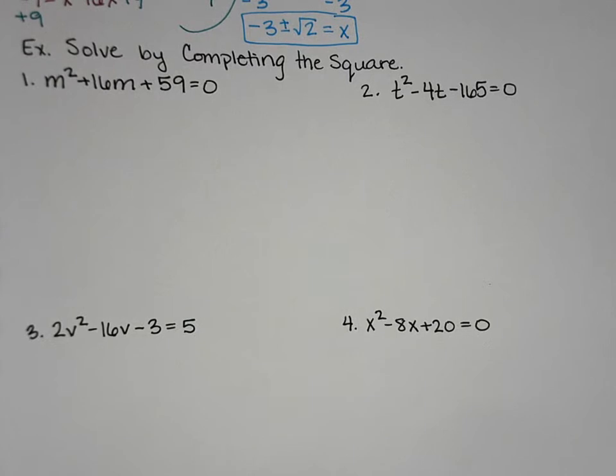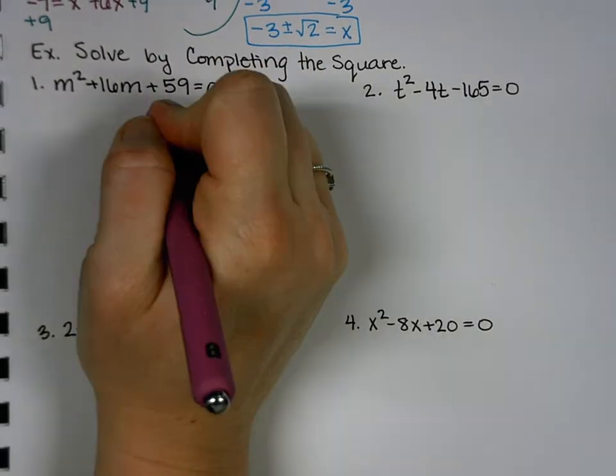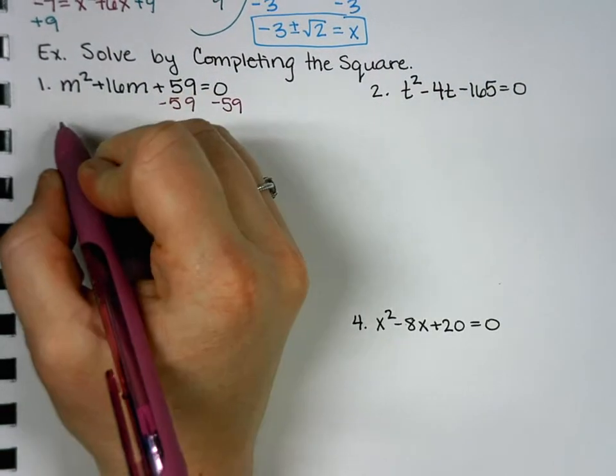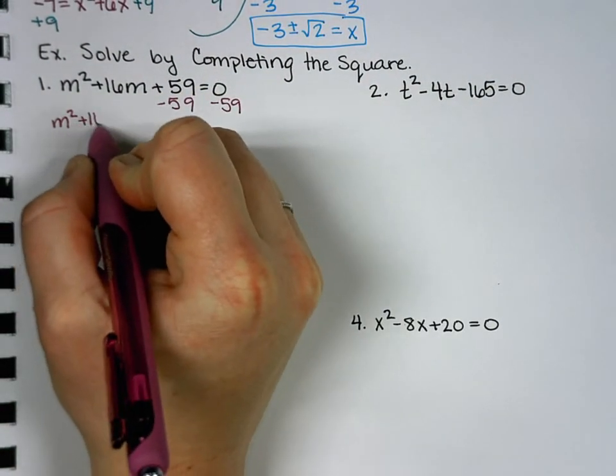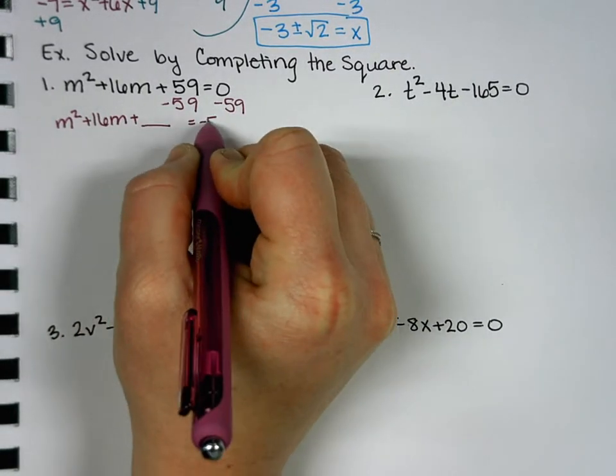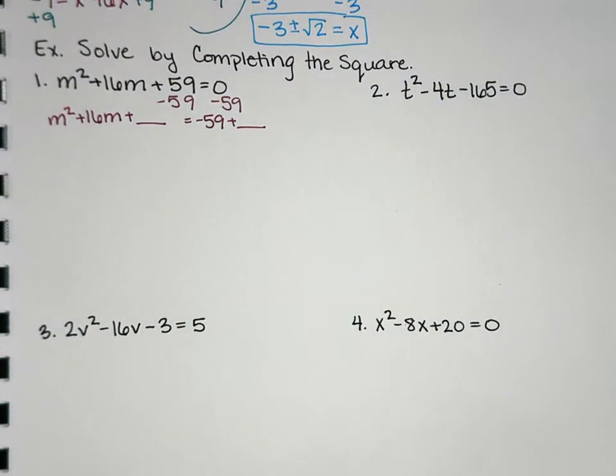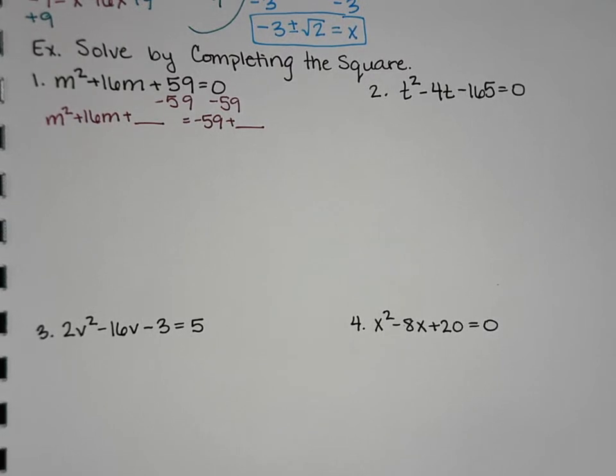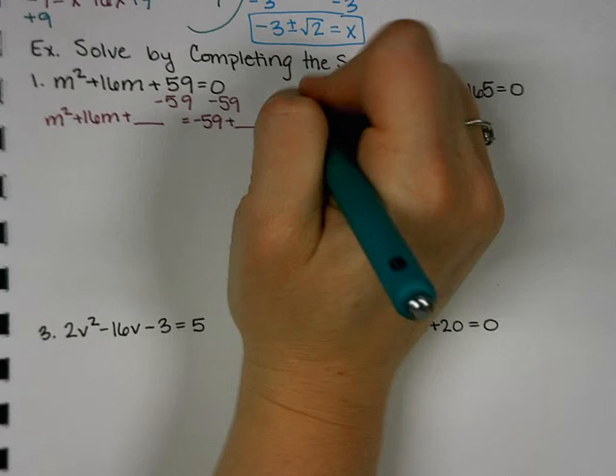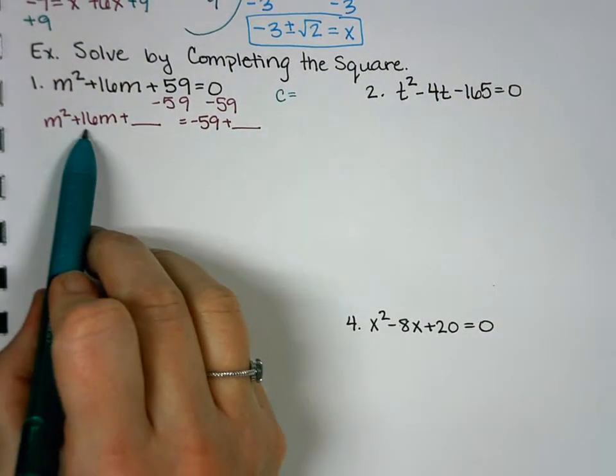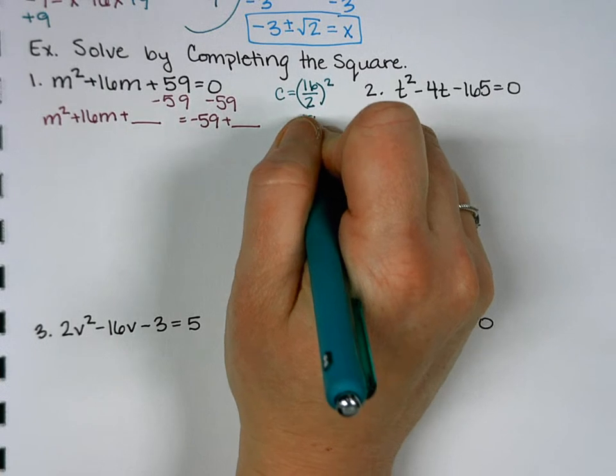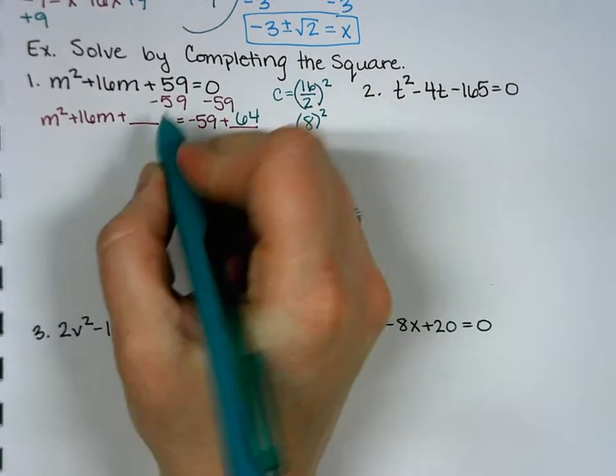So, step one, move the constant over. So for those who are absent, we're going through the steps right now. Step one, move the constant over. Then we need to find c, that we're going to add to both sides. I put those blanks in there when solving to remind myself, I have to put the number on both sides, whatever it is. So that's all those blanks are for, is as a reminder to add the same thing to both sides. So, what is our middle term? 16. So, 16 divided by 2 squared. So that's 8 squared. So that's 64. So we're going to add 64 to both sides.